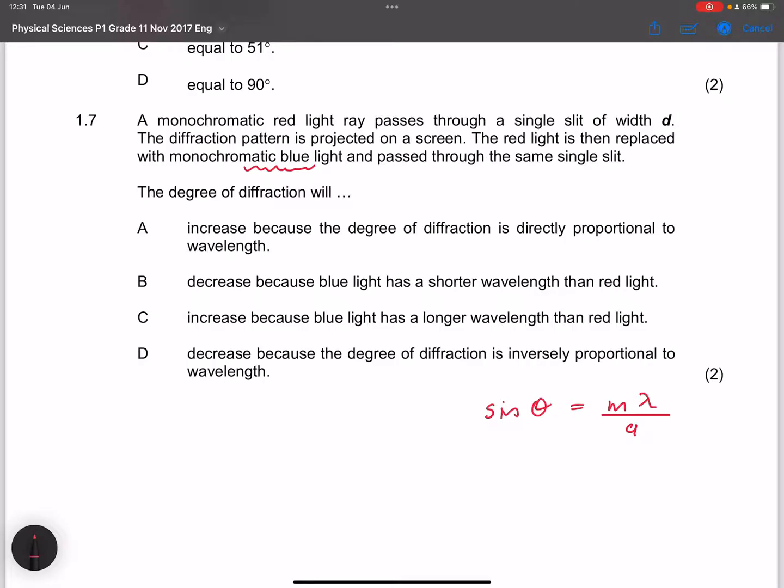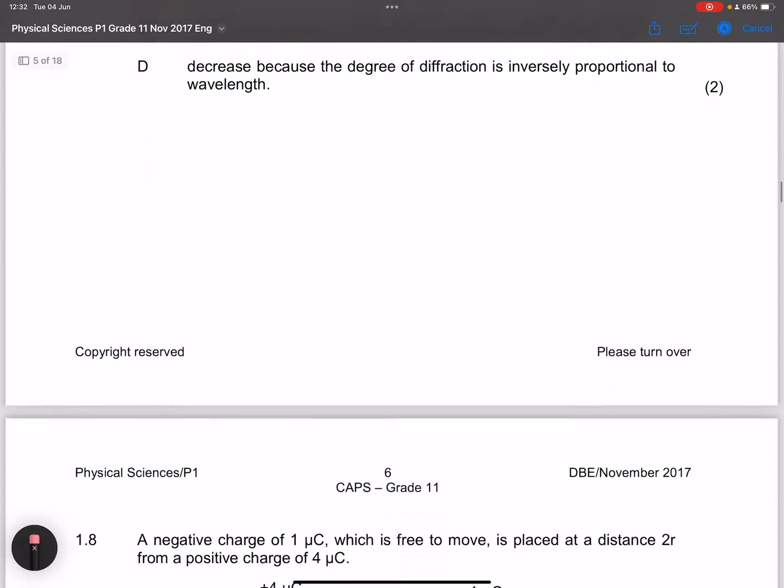Note that when we look at diffraction, we always say the sine of theta is M multiplied by the wavelength divided by A, which is the slit width. I want you to note in this case, what did we do to the wavelength? We substituted a light source with a longer wavelength to one with a shorter wavelength. So what will happen to the degree of diffraction? It should decrease. So the answers between B and D. They say decrease because blue light has a shorter wavelength than red light. Absolutely. That is true. The degree of diffraction is directly proportional to the wavelength. So that's why B would be the correct answer.